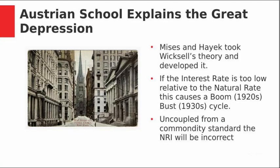Mises and Hayek developed Wicksell's theory. The fact that interest rates are actually a relative rate — relative to the natural rate — causes a boom-bust cycle. The most important point that most theorists miss is that the business cycle is not just about the Federal Reserve; it's about the Federal Reserve uncoupled from the gold standard, from a commodity standard. It was the gold standard under Wicksell's theory that anchored the natural rate to the market rate, so that if the market rate drifted away, the effect would be short-term rather than a long-term systemic disruption.